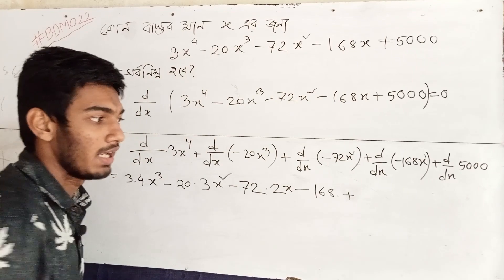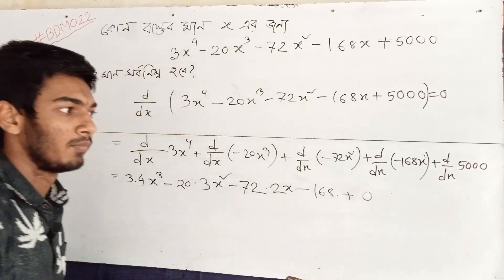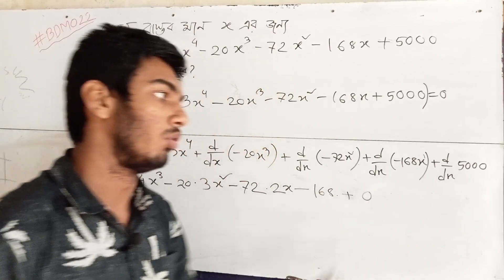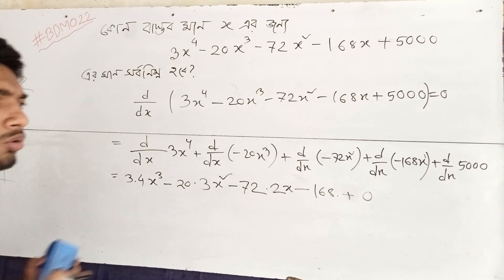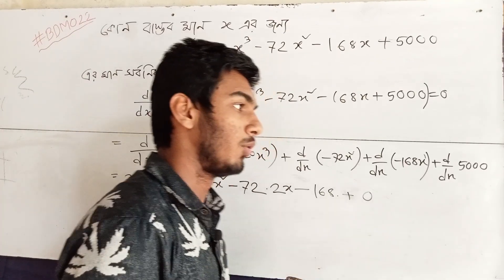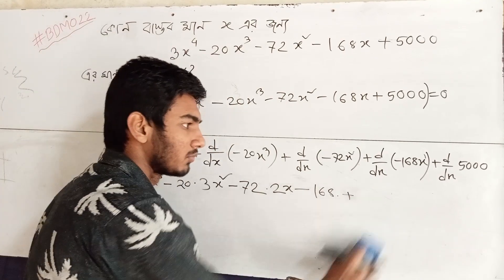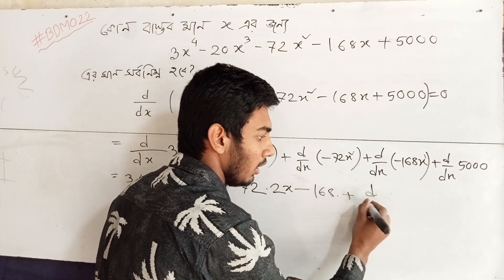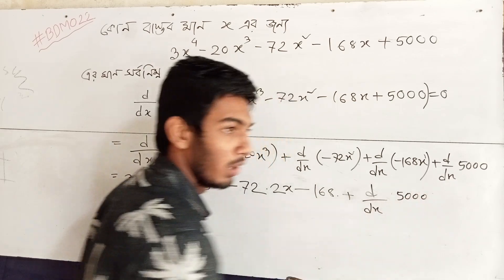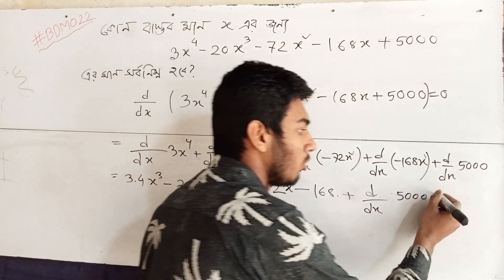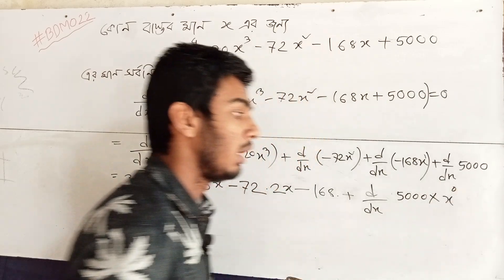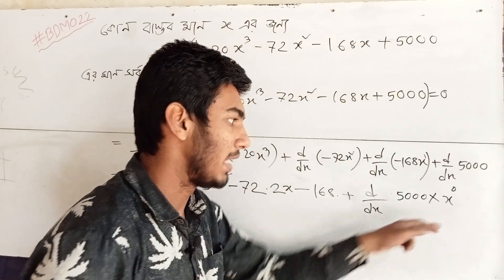If you do the differentiation, the result is 0. You can see that the derivative equals 0, and when it equals 0, that is our condition for finding the solution.